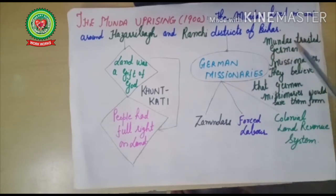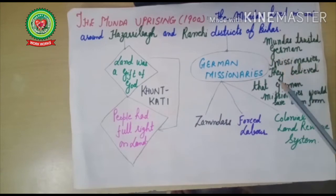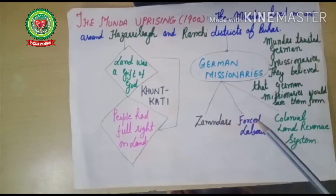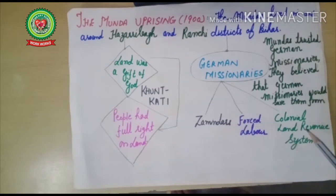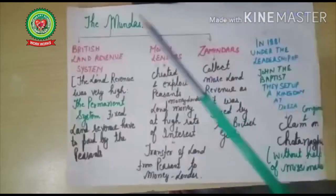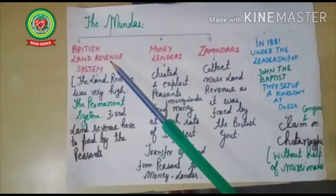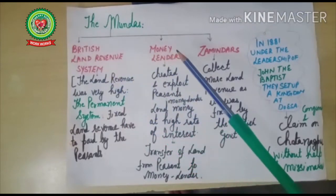The Mundas trusted the German missionaries. They believed that the German missionaries would save them from zamindars, forced labor, and the colonial land revenue policy of the British government.